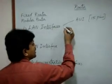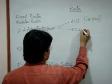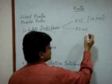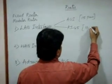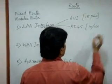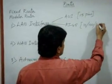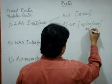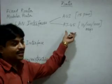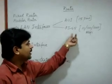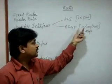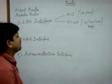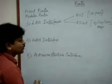Another LAN interface is the RJ45 port. It supports different bandwidths: 10 Mbps, 100 Mbps, and 1000 Mbps. The 10 Mbps port is called an Ethernet port, the 100 Mbps port is called a Fast Ethernet port, and the 1000 Mbps port is called a Gigabit Ethernet port. All of these are for LAN connectivity.